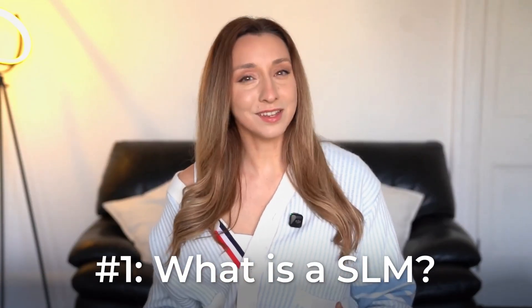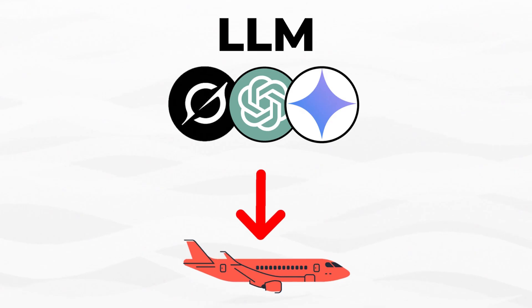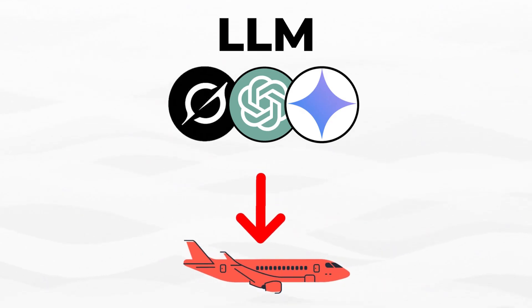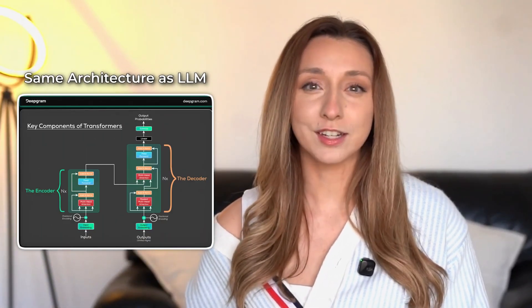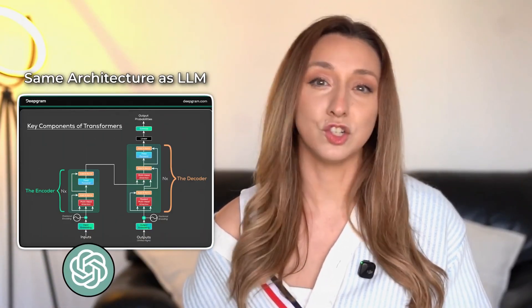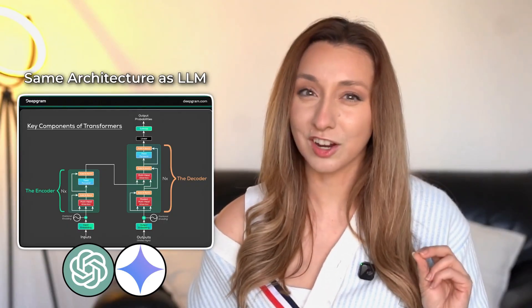So what exactly is an SLM? If a large language model is a jumbo jet — massive and packed with every gadget imaginable — then a small language model is more like a drone. It still flies, it's still powerful, but it's lighter, faster, and built for very specific missions. Under the hood, they're exactly the same — small models use the same transformer architecture that powers systems like GPT or Gemini. Same brain design, just tinier.